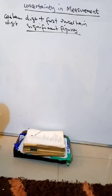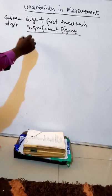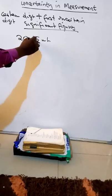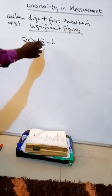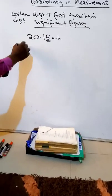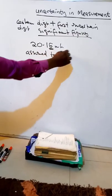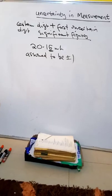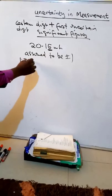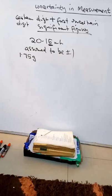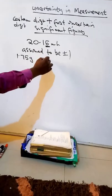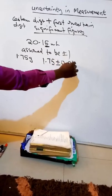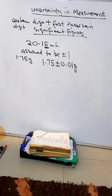The uncertainty is the last number. In the case of 20.15 milliliter, the last number — the 5 — is the uncertainty. The estimated number is usually assumed to be plus or minus one unit in the last place unless otherwise stated. For example, 1.75 grams can be taken to mean 1.75 ± 0.01 grams.